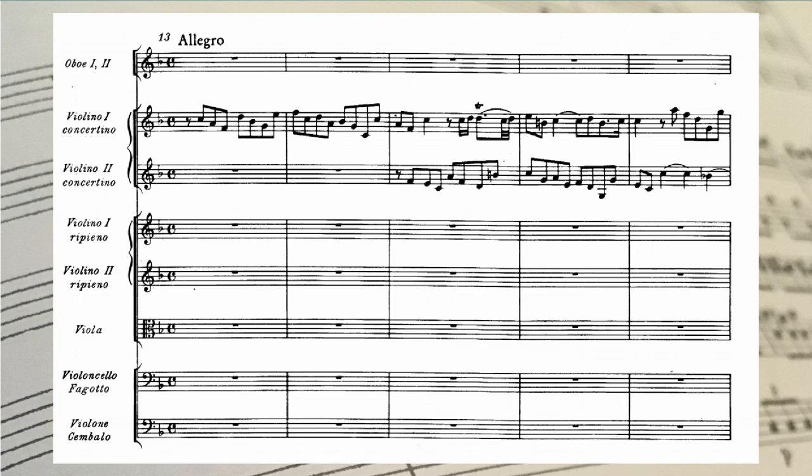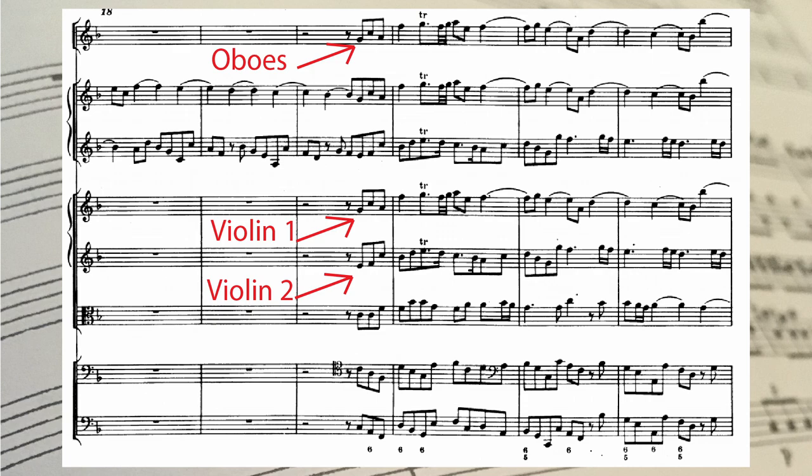In Handel's Water Music number one, you can see two different ways of handling the orchestra. In the overture, Handel doubles the violin melody in the oboes, as was standard practice of the time. At the Allegro, the concertante or solo first violin begins the theme, then the concertante second violin joins it. When the whole orchestra begins, the oboes join the first and second violins in their parts. The writing is very contrapuntal without any other textures.